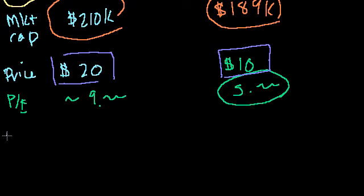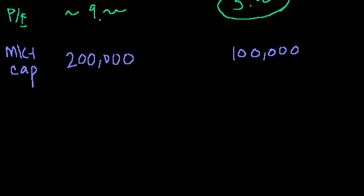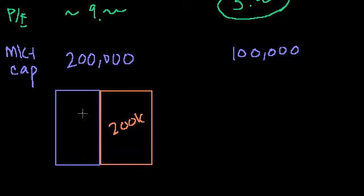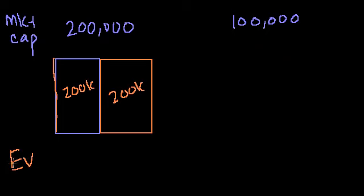To figure out enterprise value, first calculate the market cap: price times number of shares. With 10,000 shares, $20 times 10,000 implies a $200,000 market cap for company A. For company B, $10 times 10,000 implies a $100,000 market cap. Now remember, the market cap is what's left over after debt. For the first entrepreneur with no debt, the assets are completely represented by the equity. So if the market cap is $200,000, you're essentially saying those operating assets are worth $200,000. At a price of $20, the market enterprise value — what the market says the operating assets are worth — is $200,000.